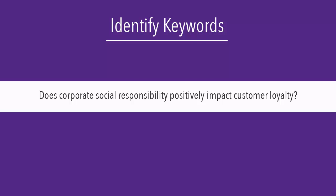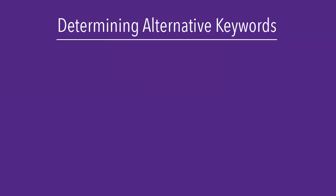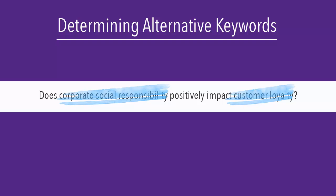The next step is to identify the main ideas or keywords in your question or sentence. My keywords are corporate social responsibility and customer loyalty. You may have more than two keywords, but you should always have more than one. If you only have one keyword, your topic is probably too general to present a good argument in your research paper.